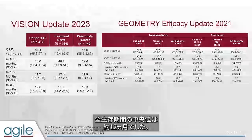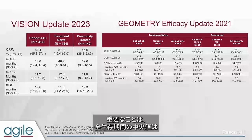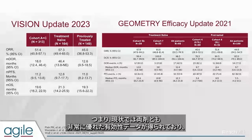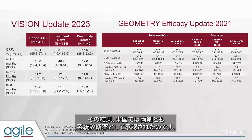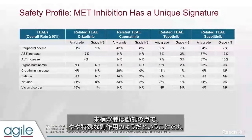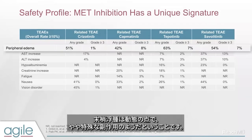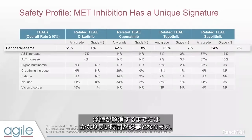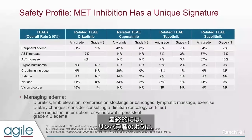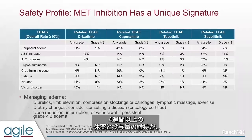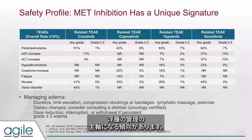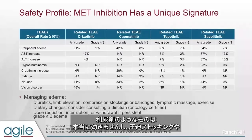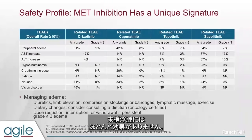This very good efficacy data led to line-agnostic approvals for both drugs in the United States. Peripheral edema seemed to be a unique side effect in terms of kinetics — it takes about two months on average to develop and can take quite a long time to resolve. It tends to behave more like lymphedema, where drug cessation for upwards of four weeks along with dose holds are the mainstays of management. Diuretics really don't work, and compression stockings and other lymphedema techniques have mostly modest impact.